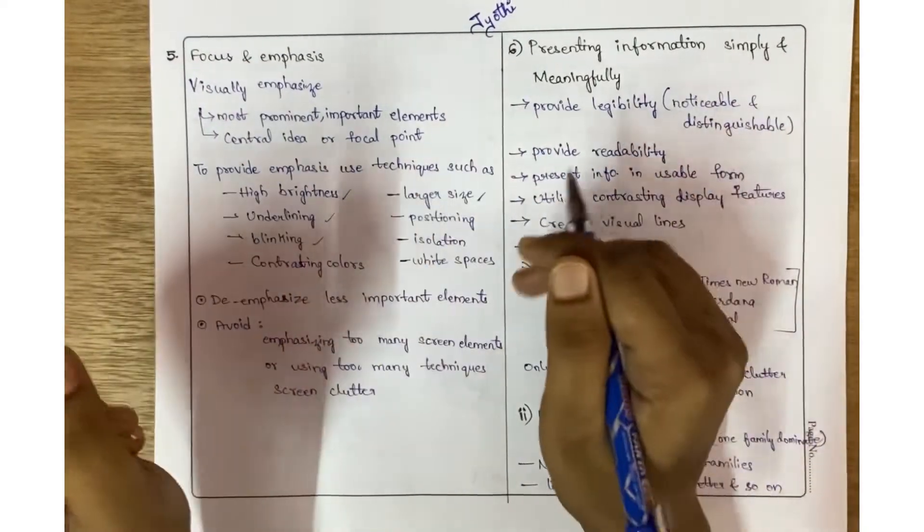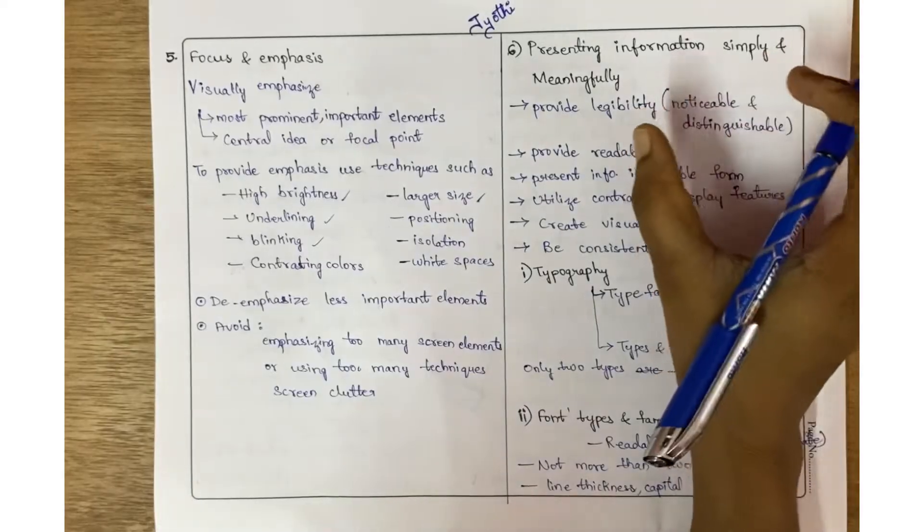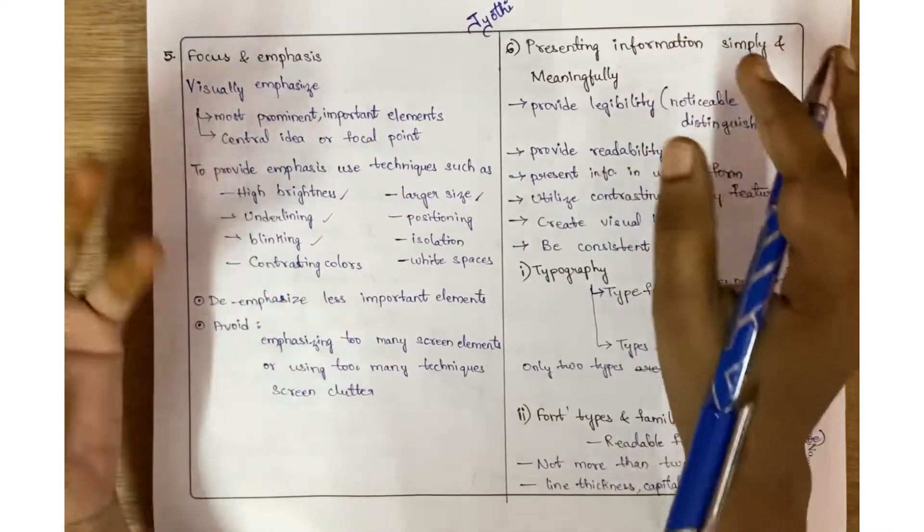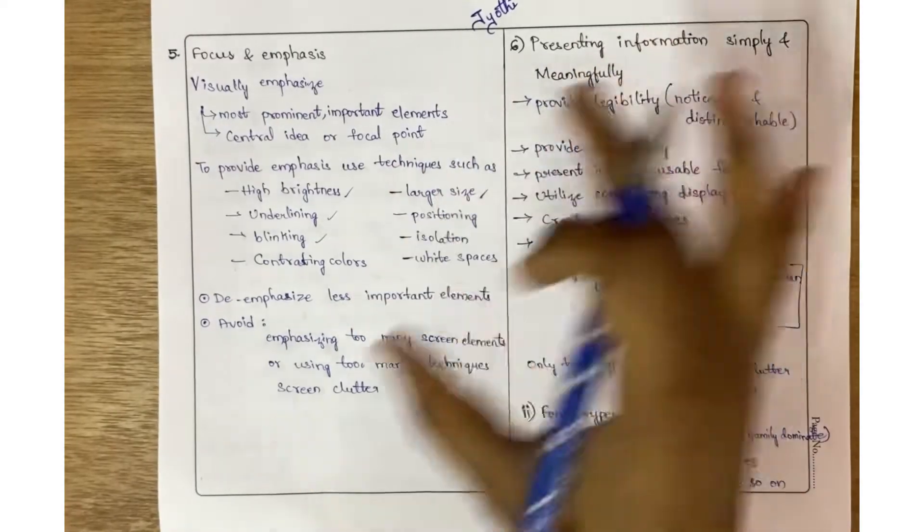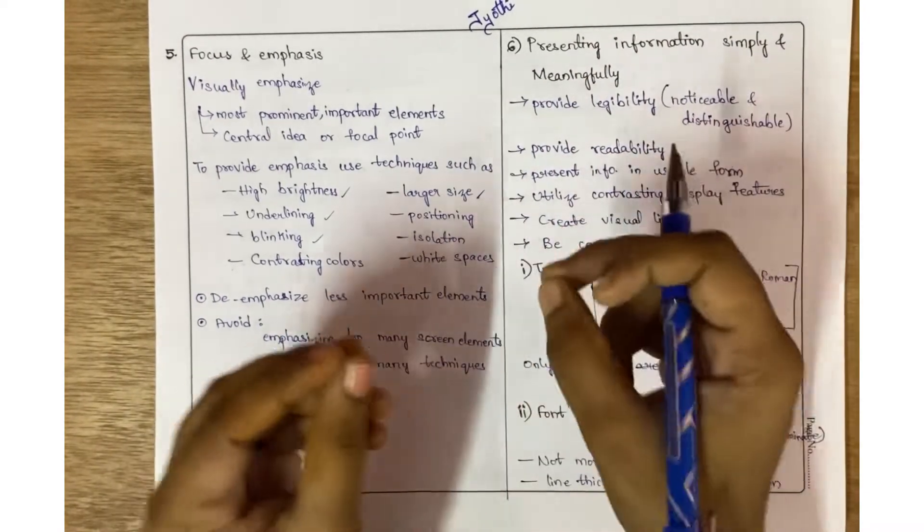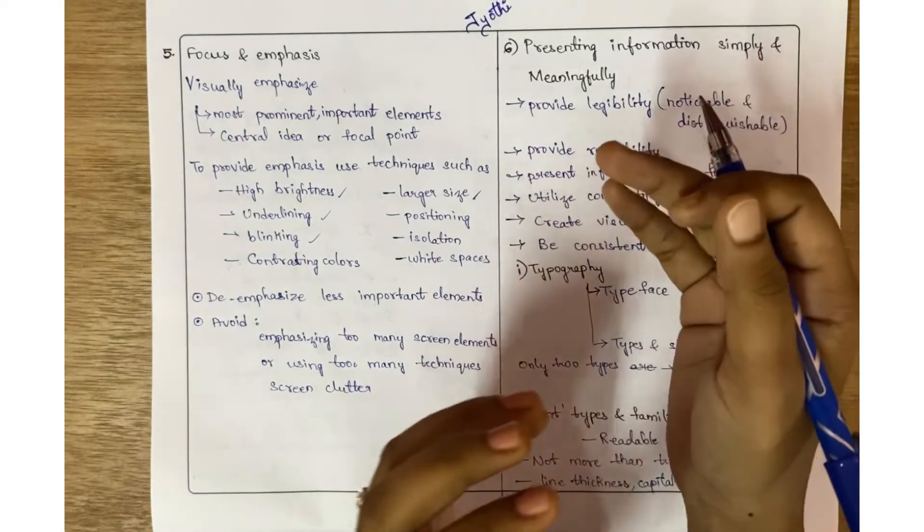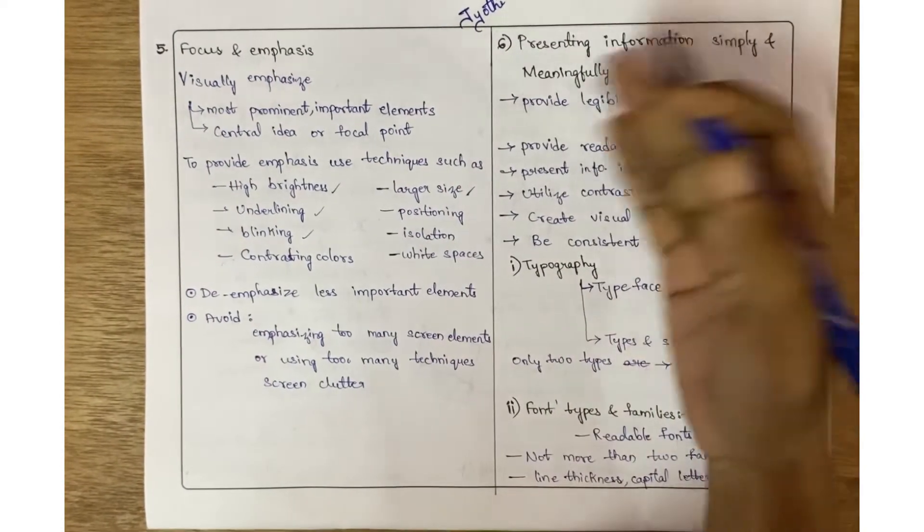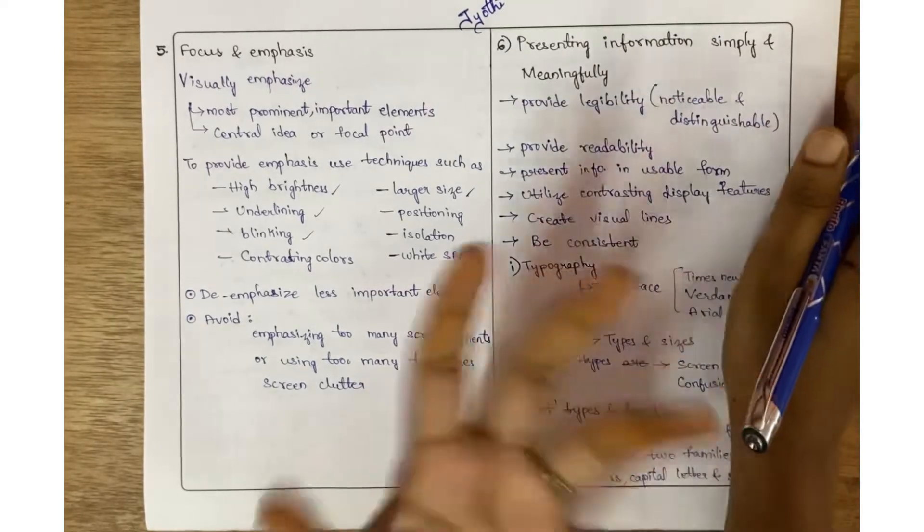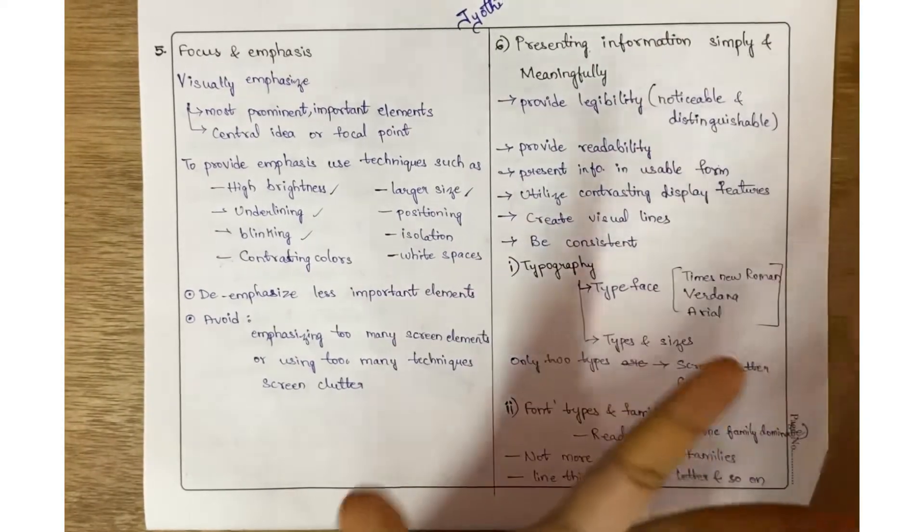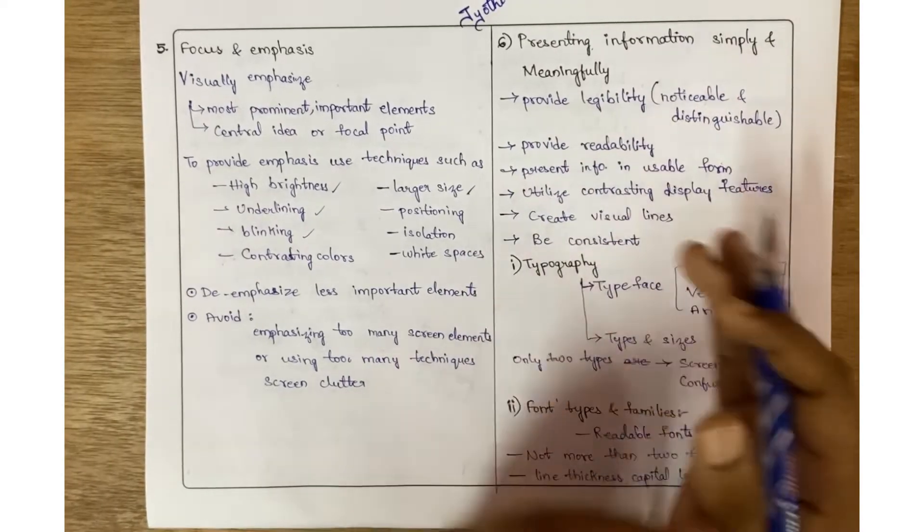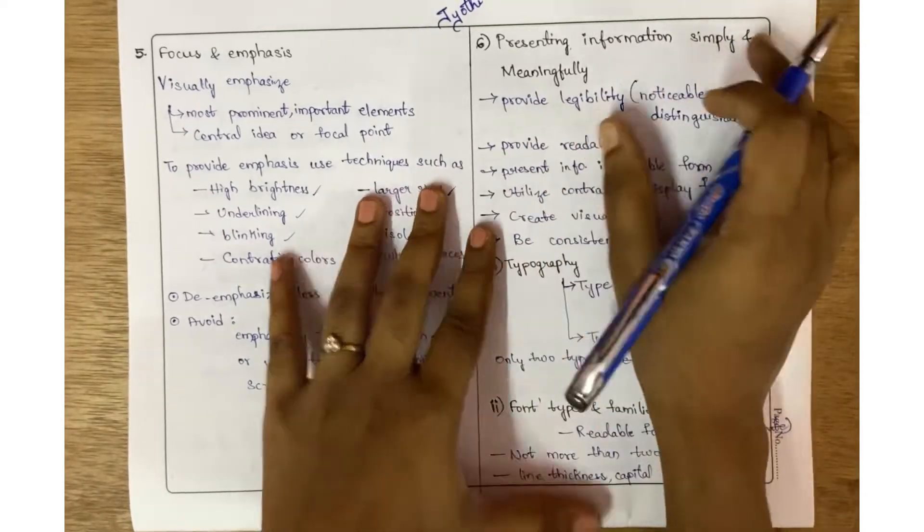Coming to the sixth parameter, it is presenting information simply and meaningfully. One thing here is why I am explaining each parameter in detail: each parameter may be asked as an individual question for seven or eight marks. They may ask for a detailed explanation about presenting information simply and meaningfully for seven or eight marks, so you need to learn each parameter in detail.